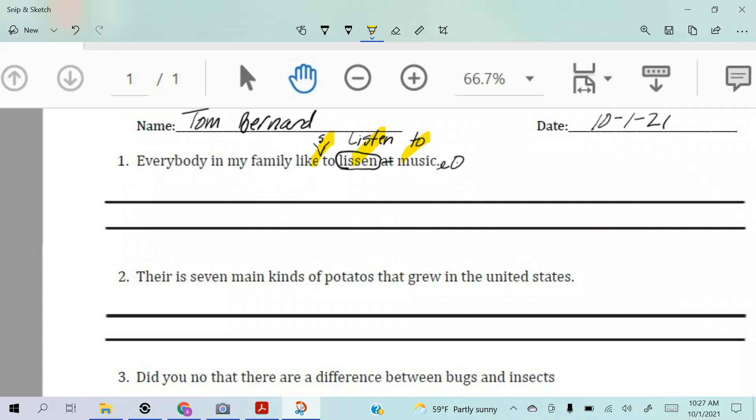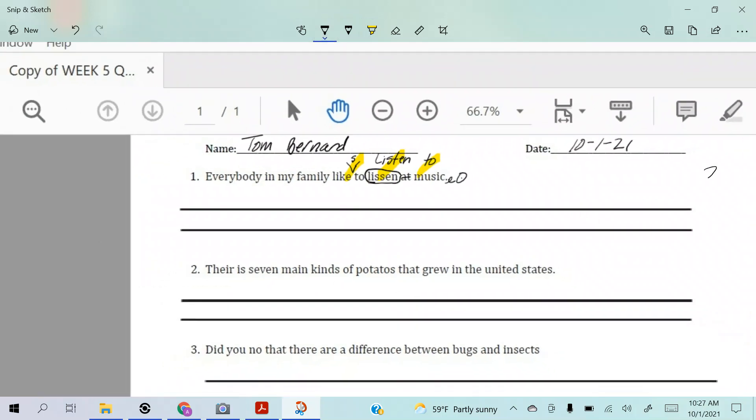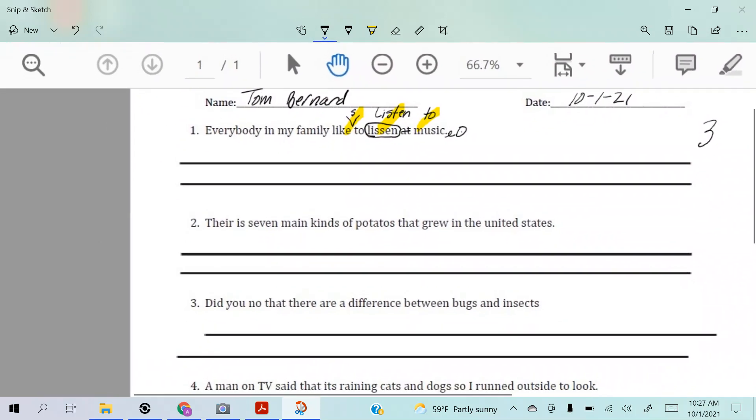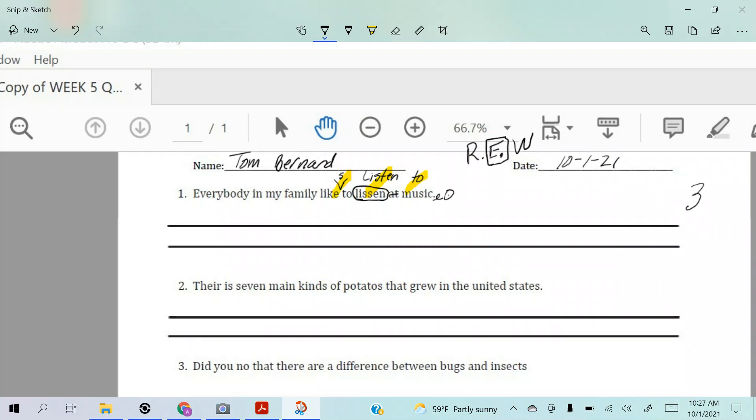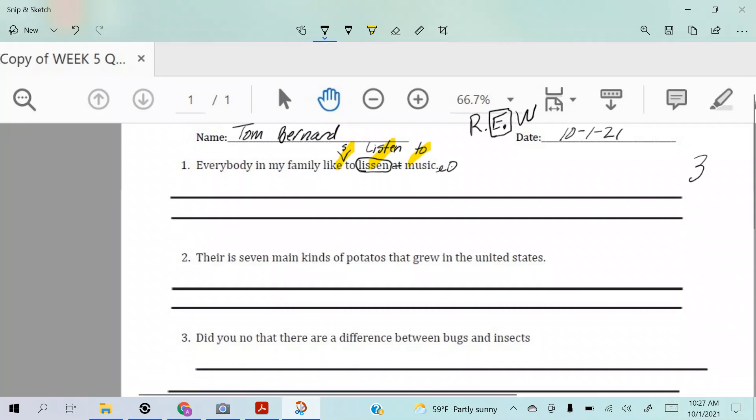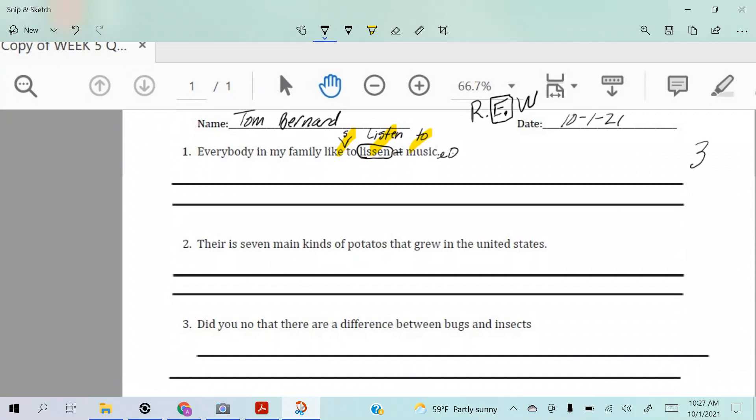Remember, when you're doing this test you're reading, then you edit. Editing is the big thing. If you're grading someone's and they're not doing well and you notice they didn't do edits, come show it to me. All right, there is seven main kinds of potatoes that grew in the united states. Oh I see it, I see lots of mistakes.